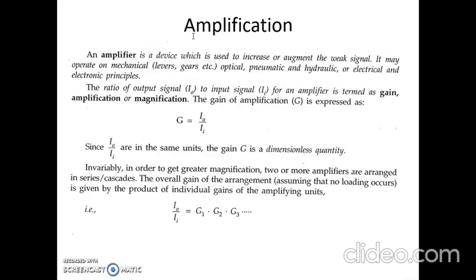An amplifier may operate on different principles, and accordingly there are different types: mechanical amplifiers, optical amplifiers, pneumatic and hydraulic amplifiers, and electrical and electronic amplifiers. The ratio of output signal to input signal is called amplification gain or magnification gain. The gain G is equal to I₀ divided by Iᵢ, where I₀ is the output signal and Iᵢ is the input signal. Since both are in the same unit, gain is a dimensionless quantity.